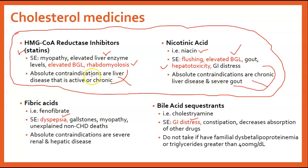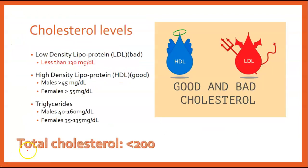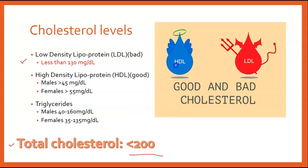Cholesterol values to know: total cholesterol should be less than 200; LDL should be less than 130 — that is your bad cholesterol; HDL is your good cholesterol, with males greater than 45 and women greater than 55. Triglycerides: males 40 to 160 and females 35 to 135. A memory trick: LDL — think Lucifer, it's bad; HDL — think heaven, it's good.